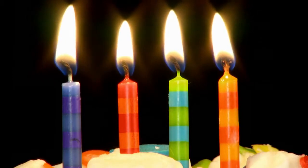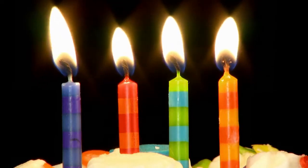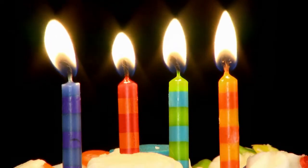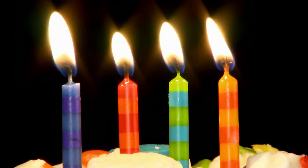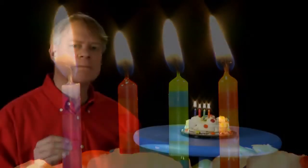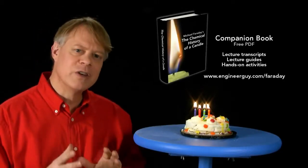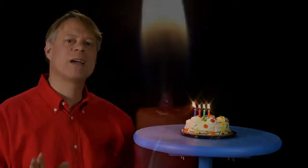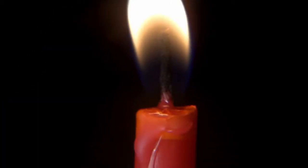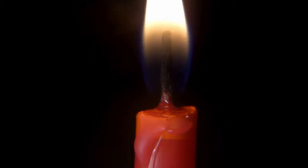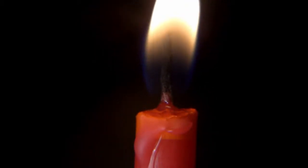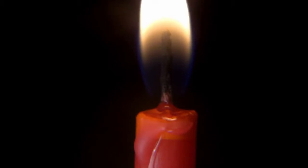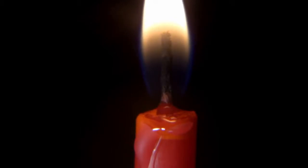You see that the flames on these burning wicks do not run down to the wax and melt it all away, but keep to their own right place — they are fenced off from the fluid below and do not encroach on the cup at the sides. I cannot imagine a more beautiful example than the condition of adjustment under which a candle makes one part subserve the other to the very end of its action. A combustible thing like that burning away gradually, never being intruded upon by the flame, is a very beautiful sight — especially when you come to learn what a vigorous thing flame is, what power it has of destroying the wax itself when it gets hold of it.